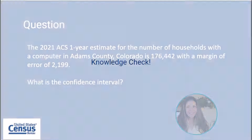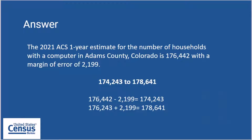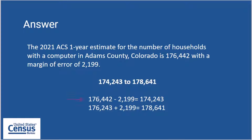Let's take a break for a knowledge check. Suppose the ACS estimate for the number of households with a computer in Adams County, Colorado in the 2021 one-year estimate is 176,442 with a margin of error of 2,199. The confidence interval is 174,243 to 178,641, which is created by subtracting 2,199 from 176,442 and adding 2,199 to 176,442. This is the 90% confidence interval.